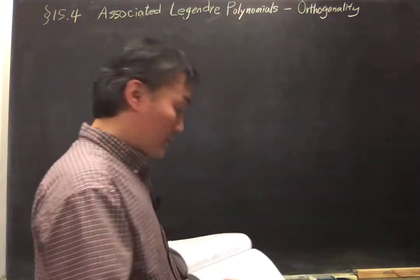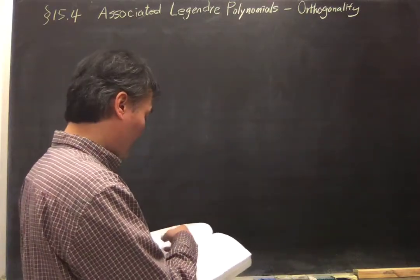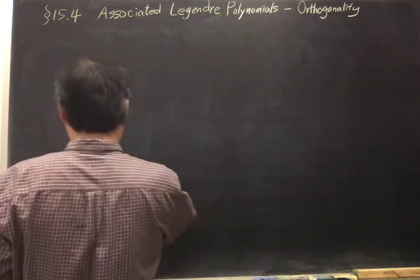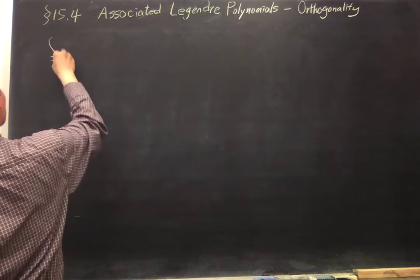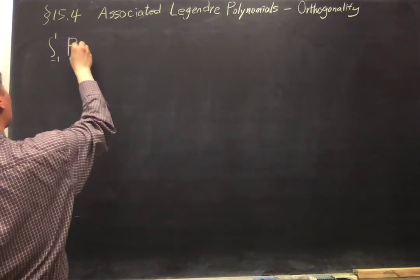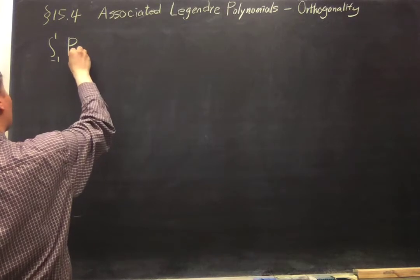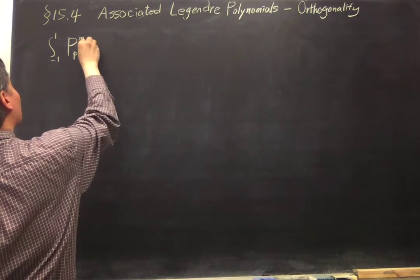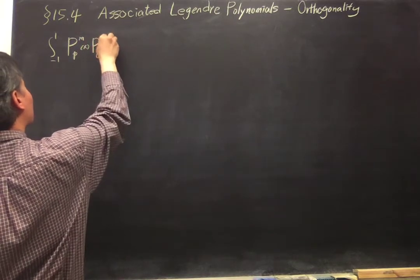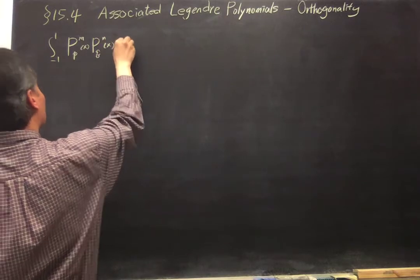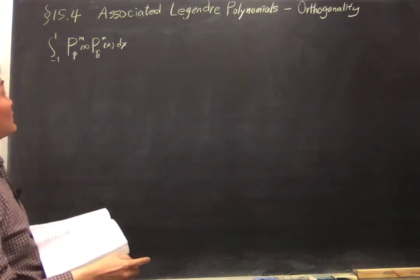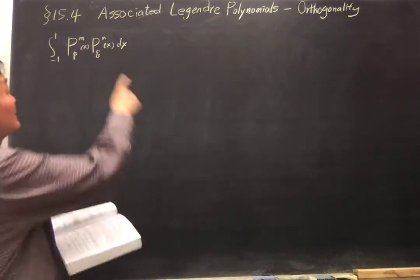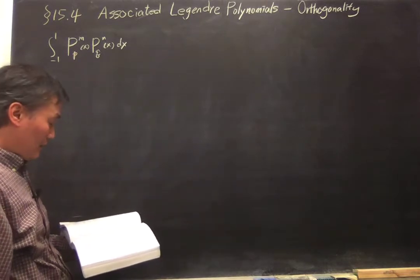Basically it's the same as a similar discussion for the Legendre polynomial. We try to integrate P_l^m or in this case P_p^m and then P_q^m of x dx from minus 1 to 1, and this is for a given m. This m in both functions are the same.